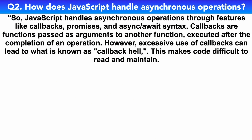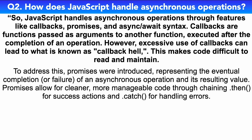JavaScript handles asynchronous operations through features like callbacks, promises, and async/await syntax. Callbacks are functions passed as arguments to another function, executed after the completion of an operation. However, excess use of callbacks can lead to what is known as callback hell, making code difficult to read and maintain. To address this, promises were introduced, representing the eventual completion or failure of an asynchronous operation and its resulting value. Promises allow for cleaner, more manageable code through chaining — then for success actions and catch for handling errors.